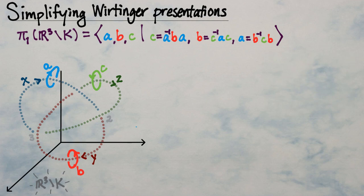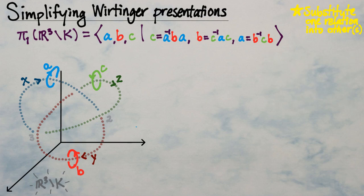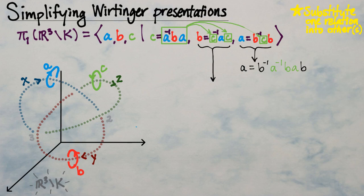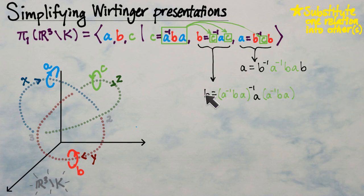One option, as in solving a three-by-three system, is substitution. If we take the first relation C = A⁻¹BA and substitute for C in the other two relations, we can eliminate C from the system and reduce to only two generators. Substituting A⁻¹BA wherever we see C, the third relation gives A = B⁻¹A⁻¹BA·B, and the second relation gives B = (A⁻¹BA)⁻¹ · A · A⁻¹BA. Now we have two relations that only involve A and B.